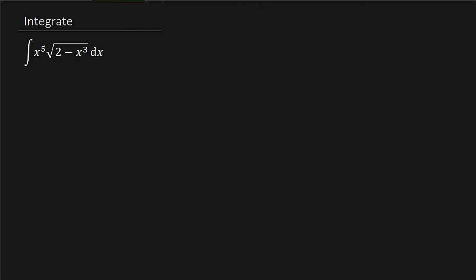Alright, so first thing I want to do is let u equal 2 minus x cubed, and so du is negative 3 x squared dx.